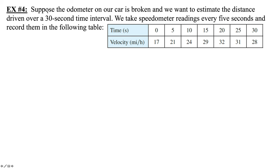So, time in seconds, 0, 5, 10, 15, 20, 25, 30. Velocity, miles per hour, 17, 21, 24, 29, 32, 31, 28.